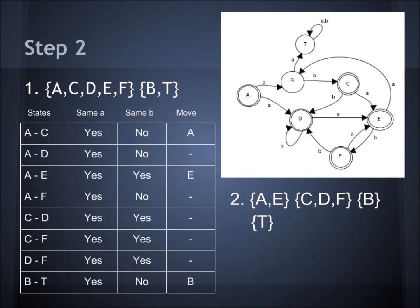Then we check A and D — do they go to the same on A? Yes. On B, A goes to B and D goes to D — no, they do not, but A is already out of the set. Then we check A and E — on A they go to the same place, and on B they both go to B, so they can stay in the same set, meaning E gets moved into the set with A. And A and F go to the same place on A but not on B, though A has already moved out of the set. Then we check C with D, C with F, and D with F — and those all can stay in the same set.